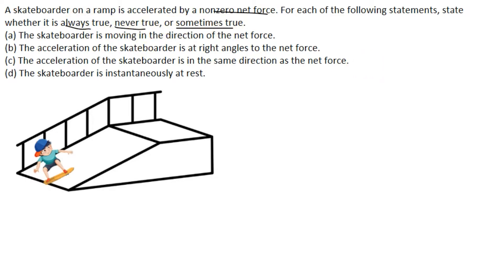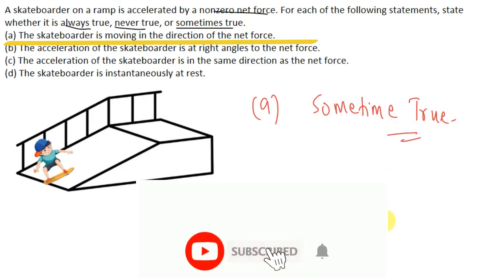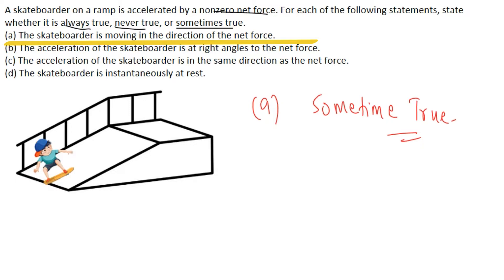The first statement is: the skateboarder is moving in the direction of net force. This can be sometimes true. From Newton's second law of motion, the direction of acceleration is always in the direction of net force, but the acceleration does not always point in the direction of motion. So yes, it can be possible or it cannot be possible — so sometimes true.